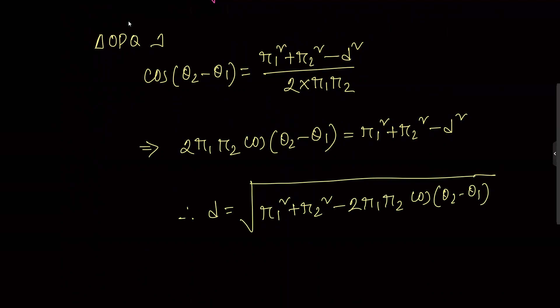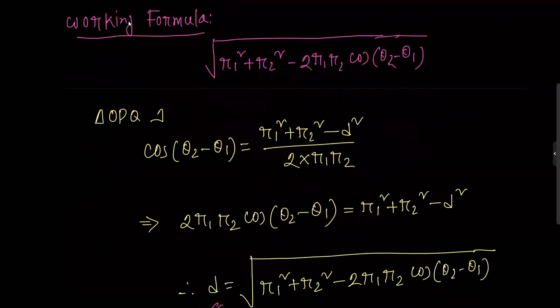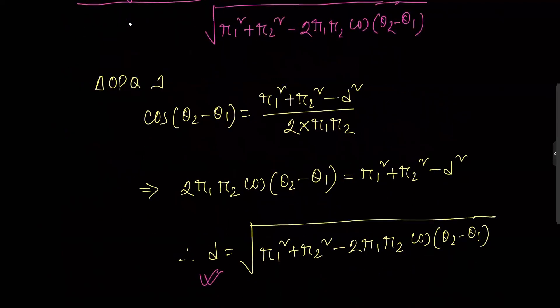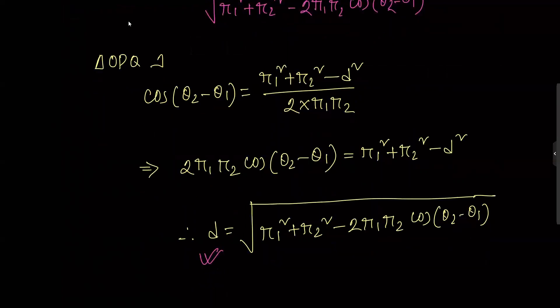So d equals root over r1 squared plus r2 squared minus 2 r1 r2 cosine of theta2 minus theta1. This is the distance formula for two points in polar coordinates.